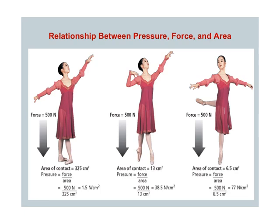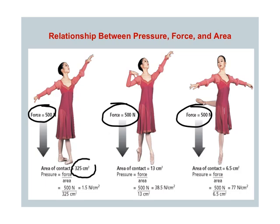This is a picture from your book of a lady doing ballet. If you look at her feet, the force is continually the same in each picture because her mass never changes and the force of gravity on her body never changes. But her contact area with the ground changes: at the beginning it's 325 cm², then she goes up on point so only her toes are touching at 13 cm², and when she lifts her leg it drops again to 6.5 cm². To find the pressure she's exerting, you take her force — 500 newtons — over that area.